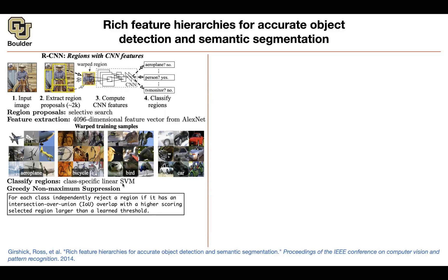A combination of intersection over union and your scores is going to help you suppress most of these proposals. Now the question is: how are you going to train? We are doing transfer learning here — our AlexNet is pre-trained on ImageNet data. But now we have a new dataset that's different from ImageNet, so we need to do some fine-tuning on the feature extractor, on these convolutional neural networks.